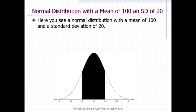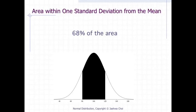Here you see a normal distribution with a mean of 100 and a standard deviation of 20. Again, 68% of the distribution is within one standard deviation of the mean.